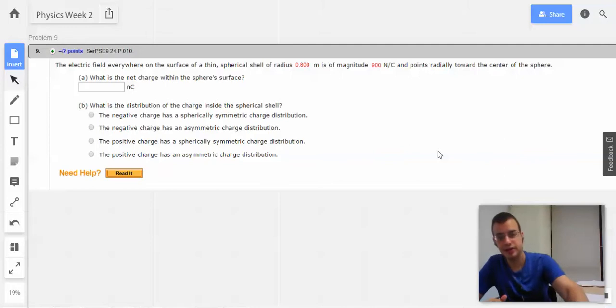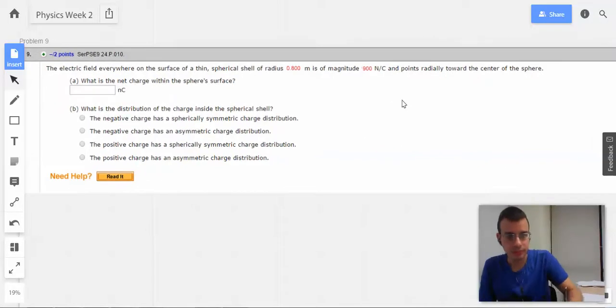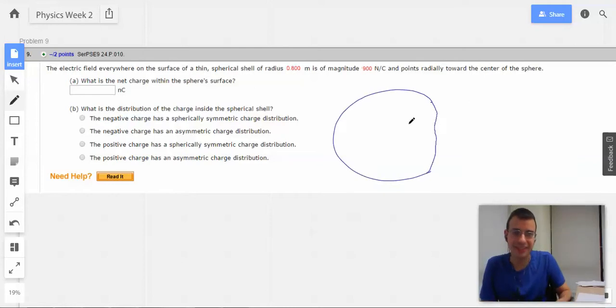Got it. So, draw a picture. That had so much potential. That just doesn't look right. So, this is 0.8. And we have a magnitude electric field pointing towards the center of 900 newtons per coulomb.